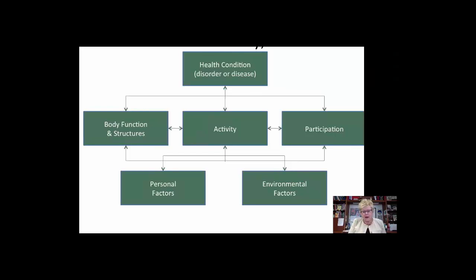Since 2001, the community of rehabilitation has come together using a language and classification system. The International Classification of Function and Disability, the ICF, is the World Health Organization's classification system which identifies the major factors that support function and disability. It also identifies all the dimensions that require measures to produce data, so we can understand the relationship between body functions and body structures, activity and participation, and the personal and environmental factors that impact health and function. You can access the ICF by visiting the World Health Organization's website.